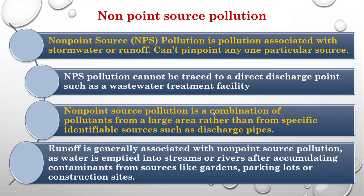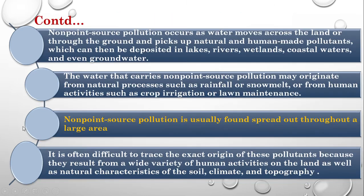Non-point source pollution is a combination of pollutants from a large area rather than from specific identifiable sources such as discharge pipes. It is usually spread out over a large area and occurs as water moves across the land or through the ground, picking up natural and human-made pollutants, which can then be deposited in lakes, rivers, wetlands, coastal waters, and groundwater.